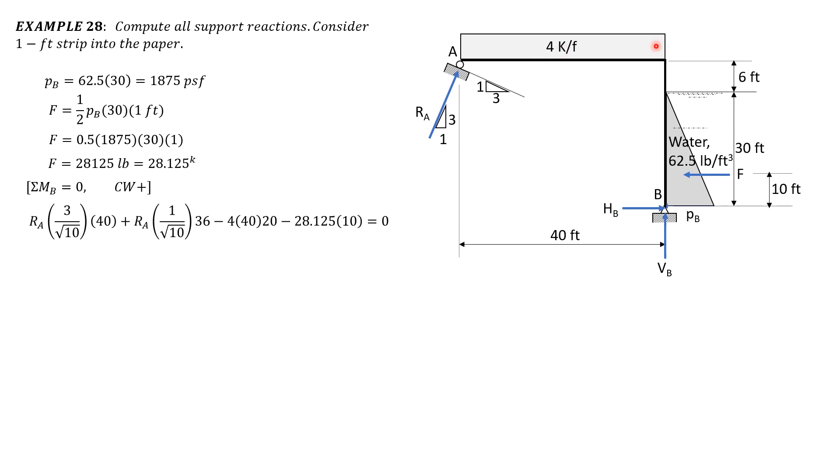Minus 4 times 40, moment arm 20. Then minus the pressure, 28.125 times 10 equals 0. So RA is equal to 70.57 kips. And it is perpendicular to that surface.